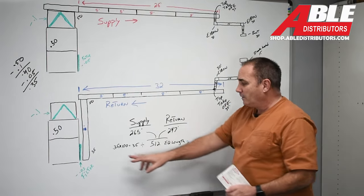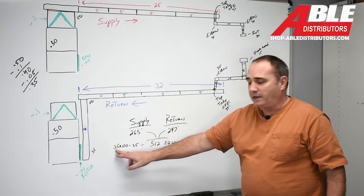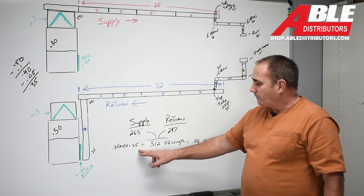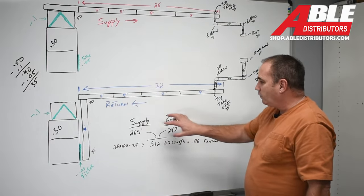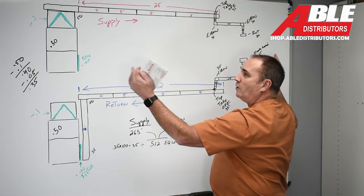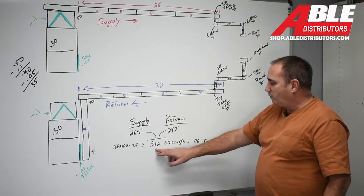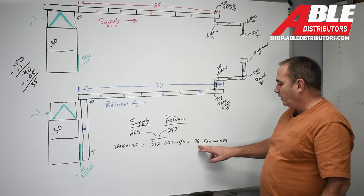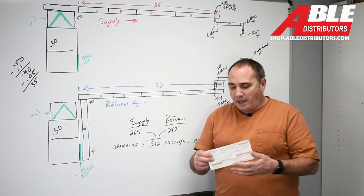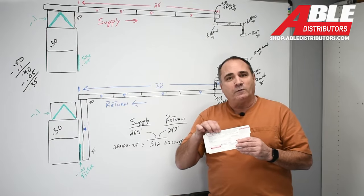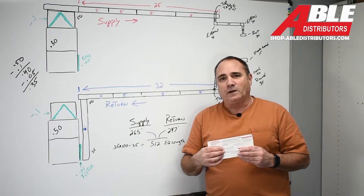Now we take that 0.35 of available static, multiply it by 100, gives us 35. Divide that by the total equivalent length of the longest return length and the longest supply length. That's 512. We do the math, gives us 0.06. So now we have what this system we need to calculate and the friction rate we're going to use when we're calculating CFMs.